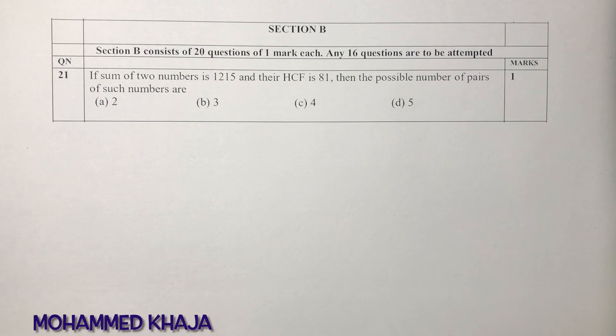If the sum of two numbers is 1215 and their HCF is 81, then the possible number of pairs of such numbers are...